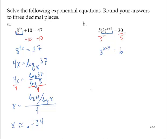Convert this to a logarithmic form. X plus 7 is equal to the log base 3 of 6. Change of base rule. X plus 7 is equal to log 6 divided by log 3.